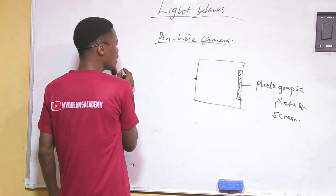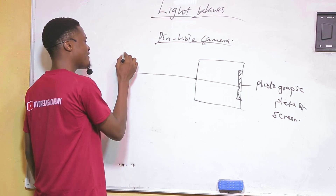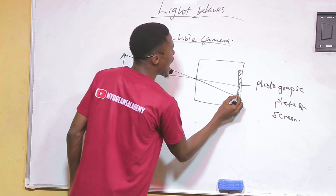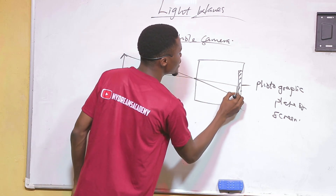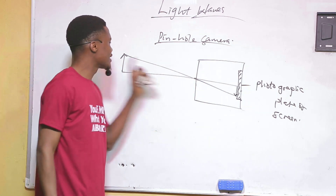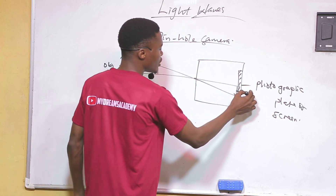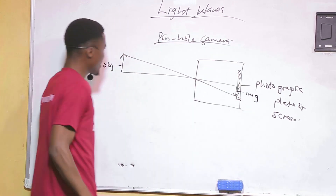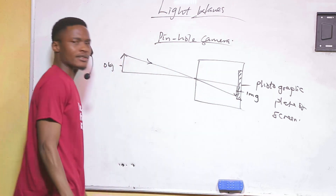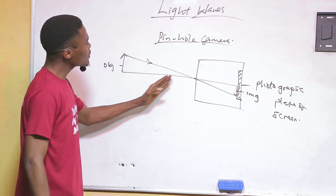If there is an object at a far distance, the light from that object will pass through that hole and cast the image of that object on the screen. So the light from the object goes in, strikes the screen, and forms the image there.